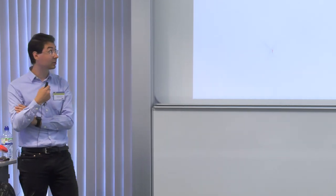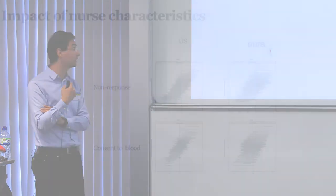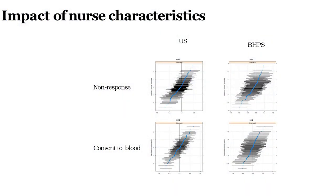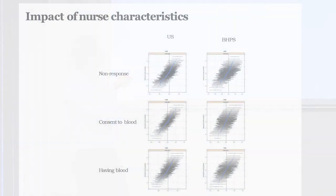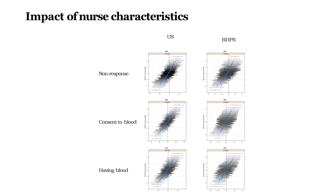Next, looking at nurse characteristics: unfortunately we don't have many — we have gender, which is not very useful since 98% are female. These graphs show predicted probabilities from the multilevel model: each blue point is a nurse with a probability of getting participation and a confidence interval. We expected all of them to cluster together, but actually some are better than expected and some are less good than expected. We can see this for Understanding Society, BHPS, and for all three stages: the nurse visit, consent to blood, and actual blood collection.